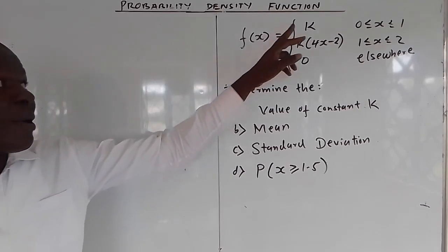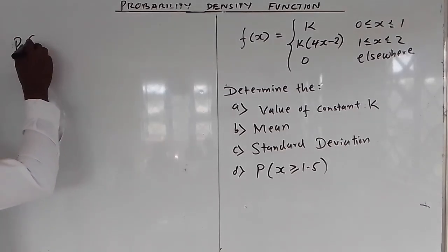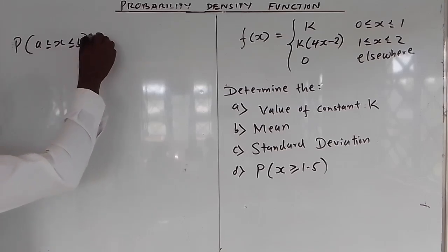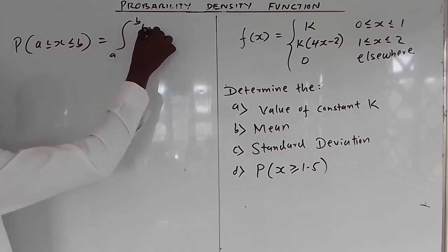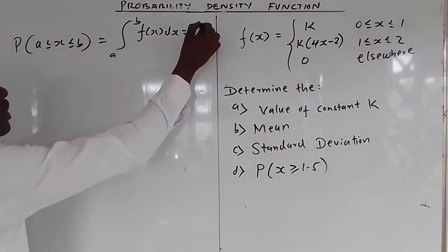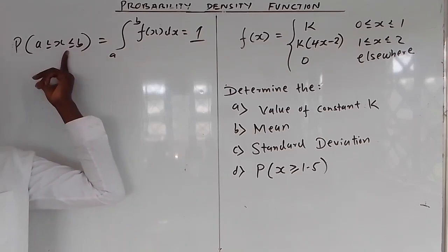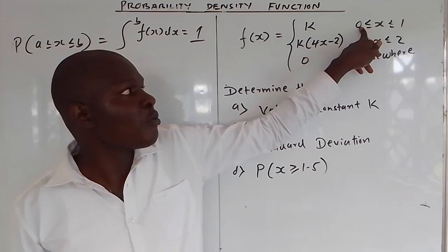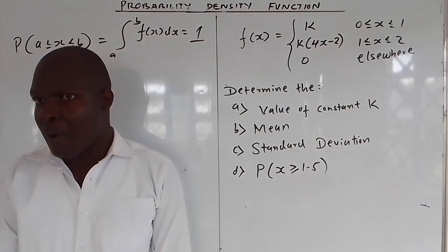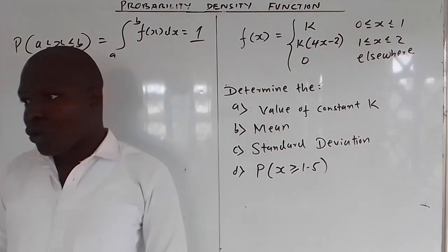The first thing you do to determine the constant k: you know that the probability that x is between the intervals a and b is given by integrating from a to b of f(x) dx. If this is the only range, it must give you the total probability of 1. Our range a to b goes from 0 and ends at 2.